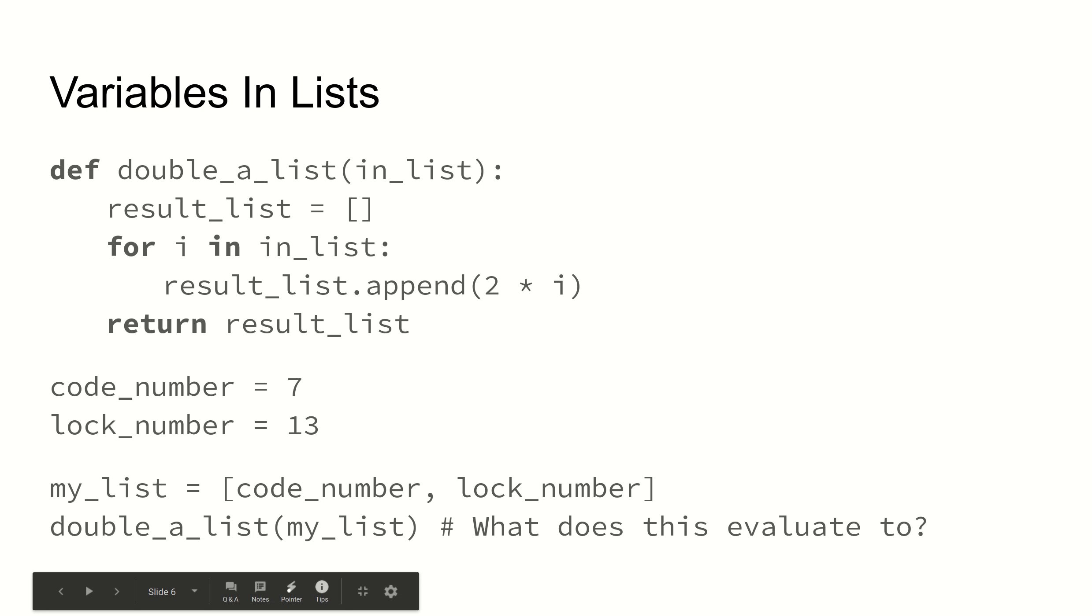And again, as before, my list won't be changed, code_number won't be changed, and lock_number won't be changed, because we're creating a new list and we're appending items onto it that are just double whatever the input items were.